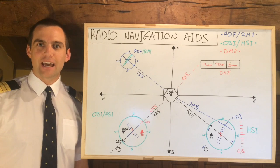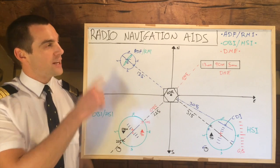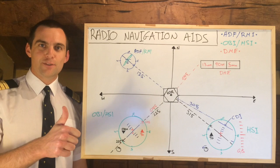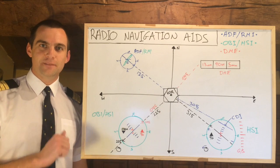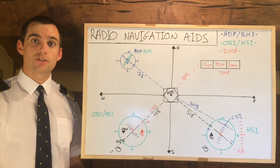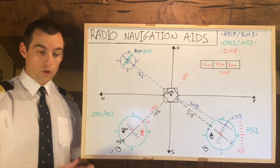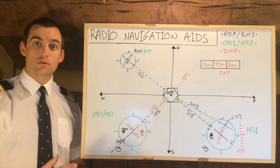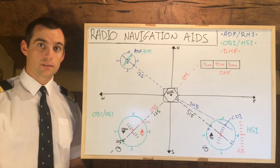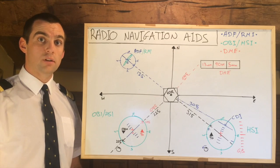Hello and welcome. Today on ATPL Theory we're going to be talking about radio navigational aids. Thanks for your suggestions. First of all, let's talk about what a radio navigational aid is — it helps us go from A to B using just our instruments. These are used for IFR flights. There are various types of radio navigational equipment.